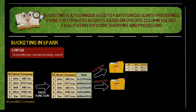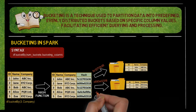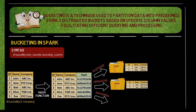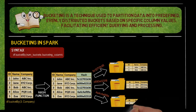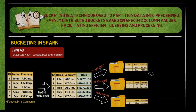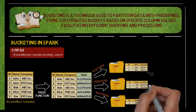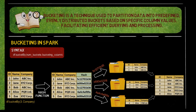Spark distributes the rows into the buckets according to their assigned bucket numbers, and saves the data as a bucket table, organizing the rows into separate files or partitions. The data within each bucket is stored in a separate directory or file. The output table represents the bucketed data, where each bucket contains a subset of rows based on the hash values of the company column.